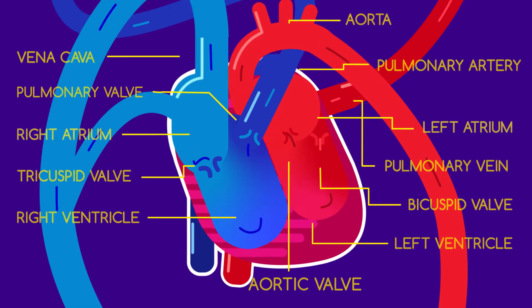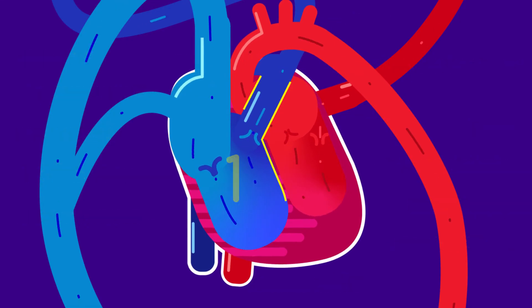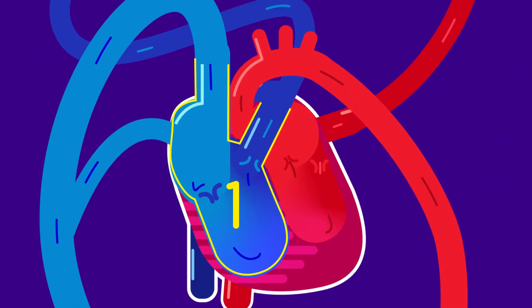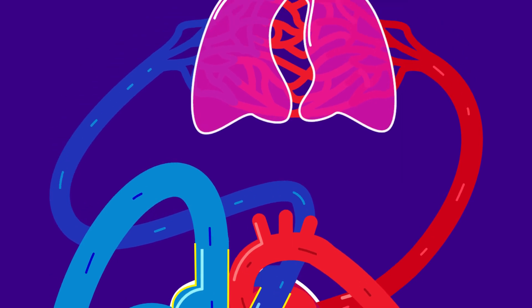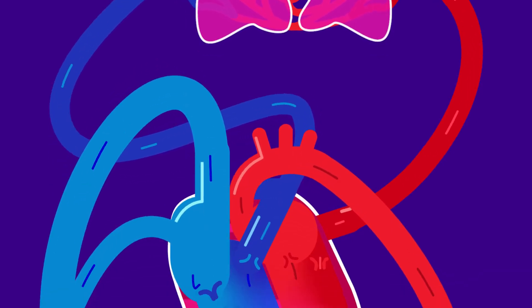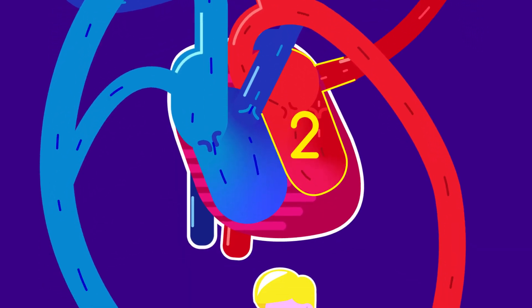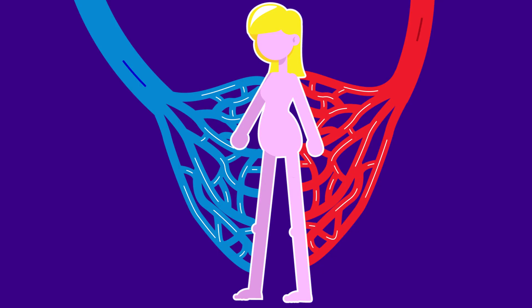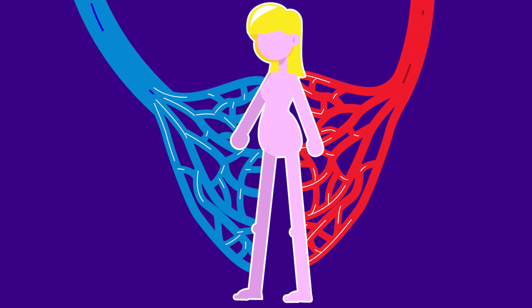Maybe you've heard your heart described as a dual pump. The first pump sends blood from the heart to your lungs, and the second, bigger pump sends the oxygenated blood all around your body.